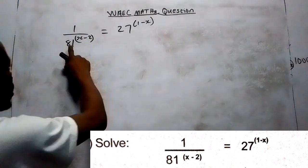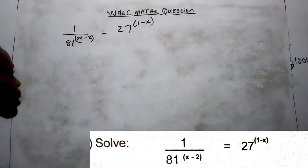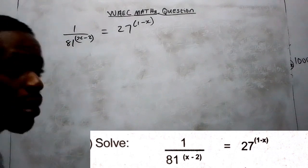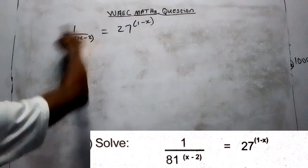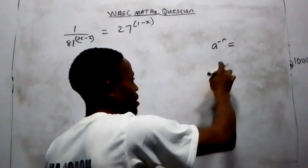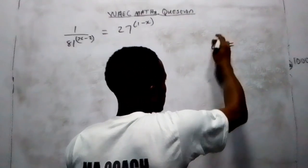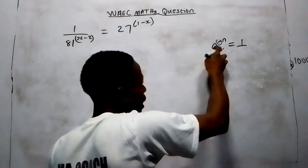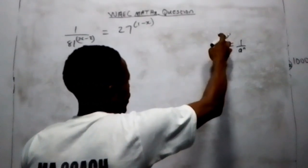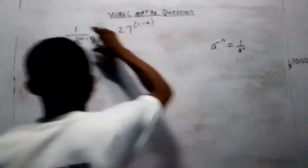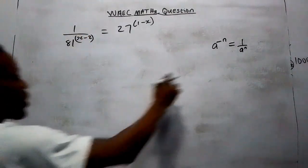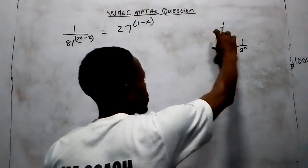Now, in this part we have 1 over 81 to the power of (S minus 2), equal to 27 to the power of (1 minus S). When you see a question like this, you need to remember the law of indices. Specifically, we use the negative law of indices: if you have an expression A to the power of minus N, it is the same as 1 over A to the power of N — it represents the negative or inverse. So, this 1 over expression is in the form of A to the power of minus N.